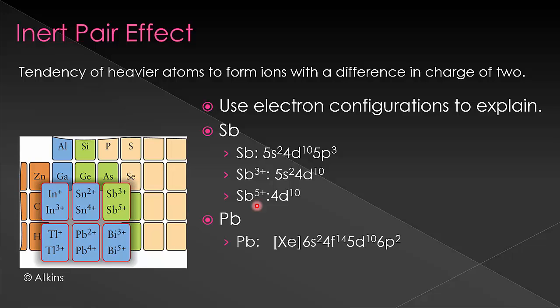Let's do the same thing for lead. We write out the valence electron configuration. We have 6s2. Now we have the f orbitals in here. So we also have 4f14, 5d10, 6p2.